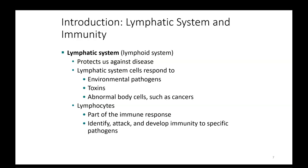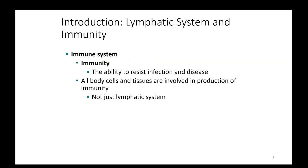Lymphocytes are the cells that are going to be part of the immune system, and their job is going to be to identify, attack, and develop immunity to specific pathogens. Immunity is simply the ability to resist infection and disease. All body cells and tissues are involved in the production of immunity, not just the lymphatic system.